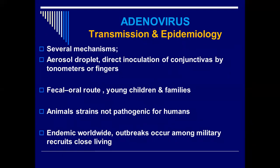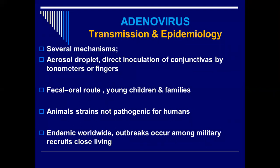The transmission of adenoviruses occurs by several ways: aerosol/droplet transmission, fecal-oral route, and direct contact. The direct contact or inoculation of the conjunctiva can occur via tonometers or fingers — a tonometer is the instrument used by ophthalmologists to measure eye pressure for glaucoma. Aerosol/droplet transmission causes respiratory disease; direct conjunctival inoculation causes conjunctivitis; and the fecal-oral route leads to gastrointestinal infection. Animal strains exist but they do not cause disease in humans.